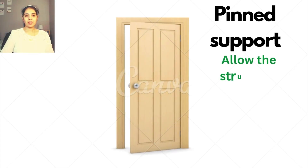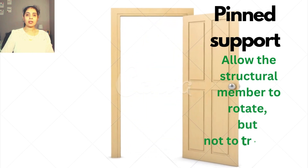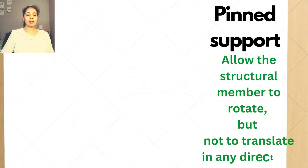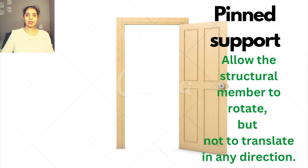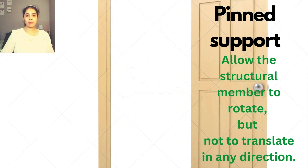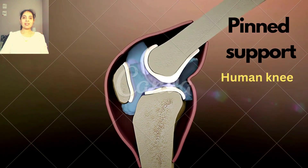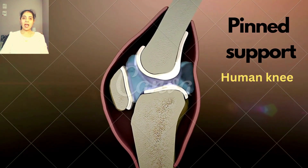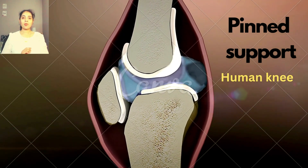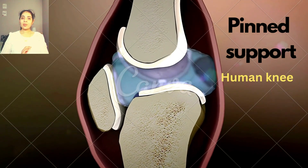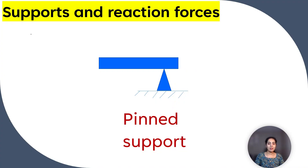Pin support: they allow structural members to rotate but not to translate in any direction. The opening and closing of a door is an example of a pin support. The knee can also be idealized as a pin support, as it allows rotation in one direction and provides restriction to lateral movement.